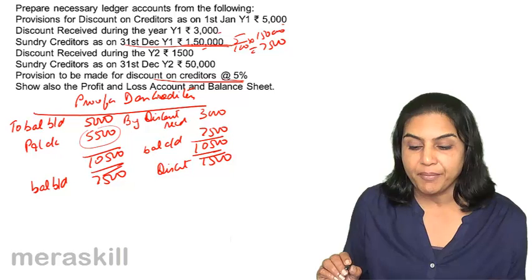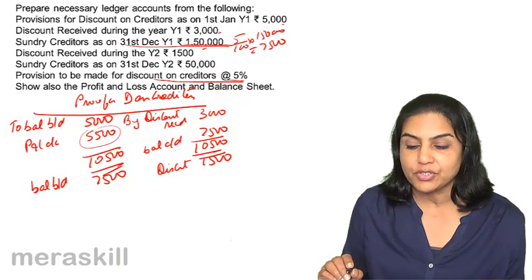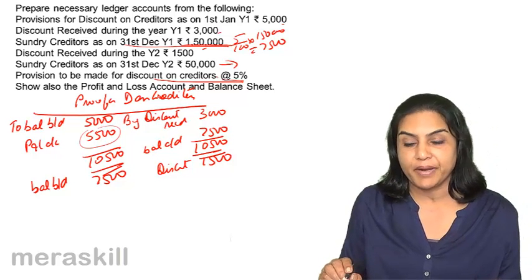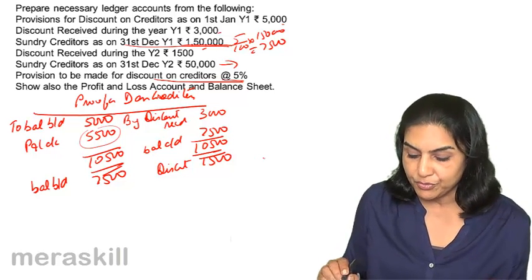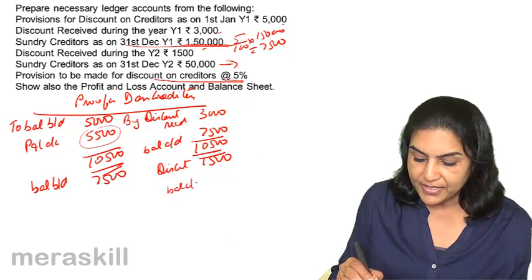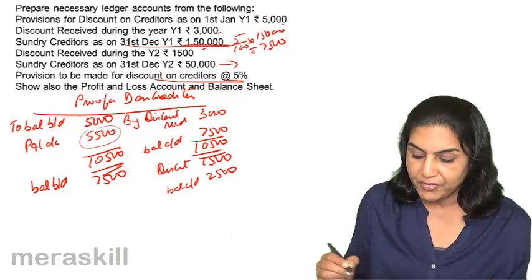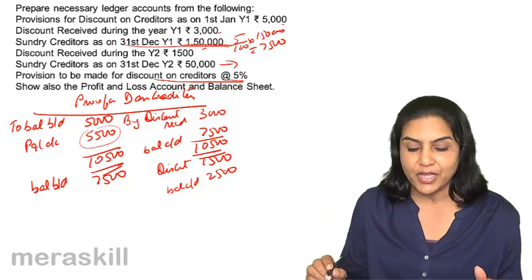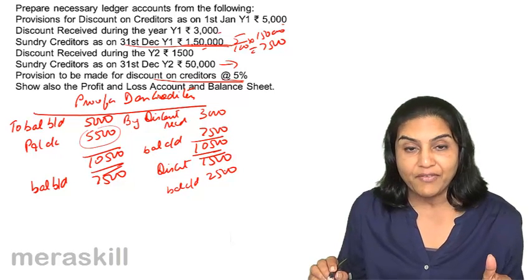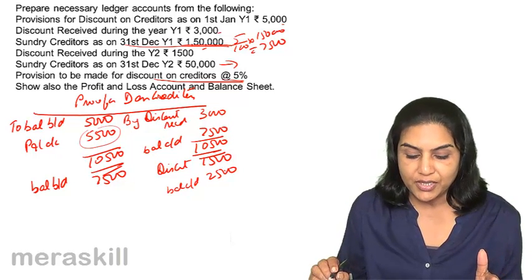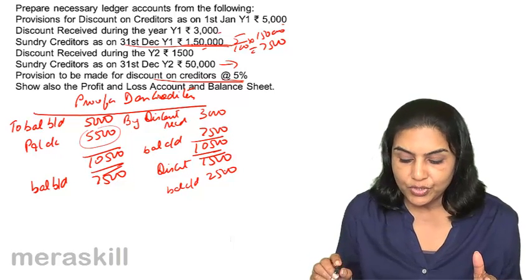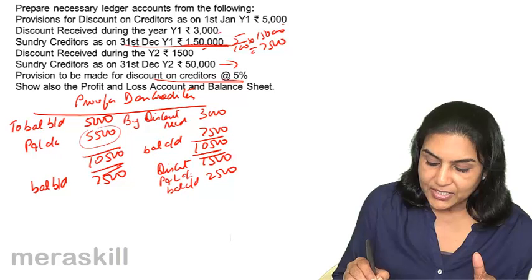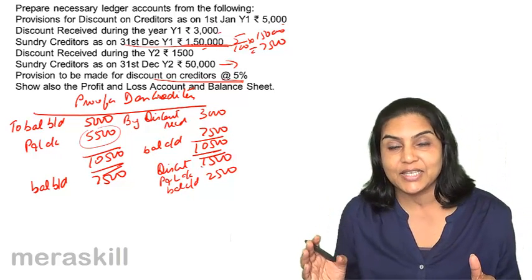Sundry creditors have come down — it's only 50,000. Five percent of 50,000 is the closing balance that needs to be maintained, which would be 2500 — balance carried down 2500. But we have 7500 and have adjusted only 1500, so we have a balance of 6000 in the provision account, but we need only 2500. Therefore the balance is again adjusted against the profit and loss account.